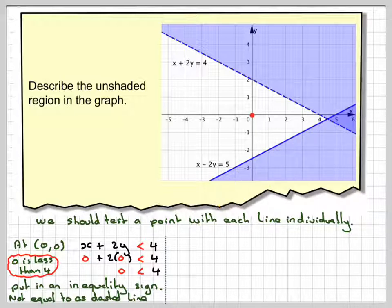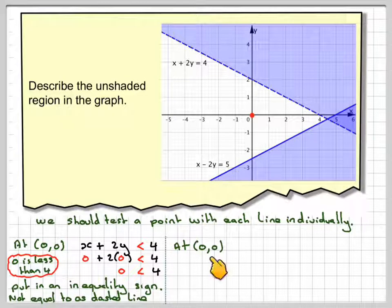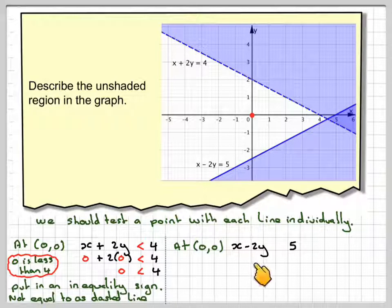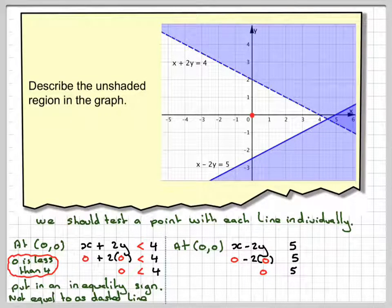Testing the other line this one here. At 0,0 again, the same point. We're just testing this one here, x minus 2y and 5 because the line is x minus 2y is equal to 5. Putting 0 in we're going to get 0 minus 2 times 0 and 5. That's going to give me 0 and 5.